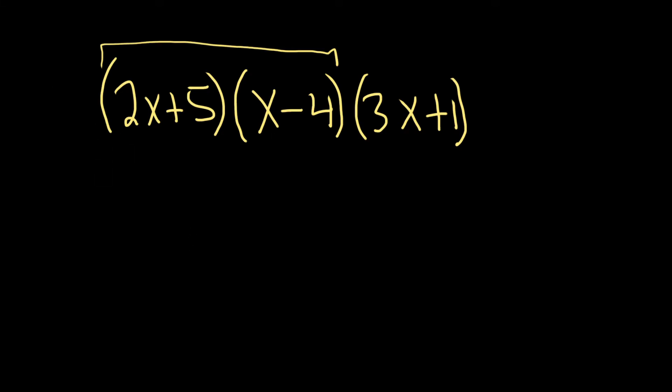Okay, so to multiply these out, what you do is you take this one here and you just multiply it by the x and the negative 4. Then you take the 5 and you multiply it by the x and the negative 4. So we'll do 2x times x. That's going to give us 2x squared. And then 2x times negative 4 will give us negative 8x.